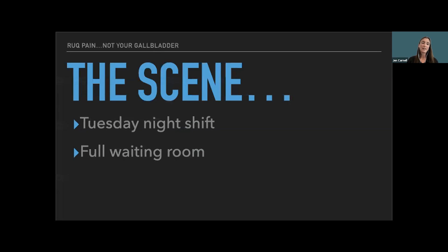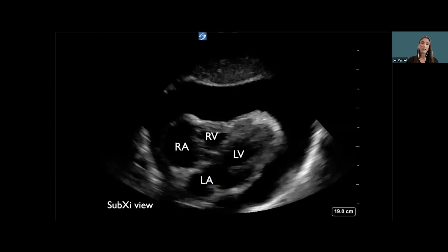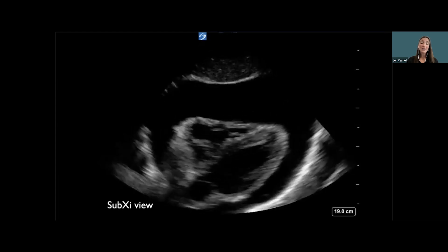The next patient who really piqued my interest in RUQ pain as something other than the gallbladder was on a Tuesday night shift. The waiting room was totally full, and this was a young 24-year-old guy who the nurses flagged for a heart rate of 128 — he got a bed in the ED. He looked great, nothing remarkable on exam, but he may have passed out and couldn't say why. I go to look at his gallbladder, but shooting through the liver all I see is a giant puddle of black around the heart — a massive pericardial effusion.